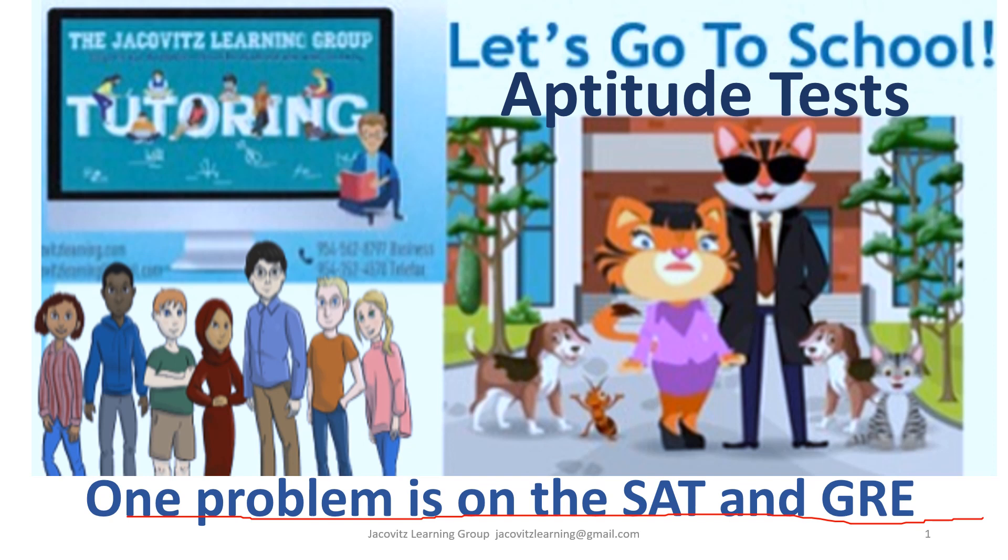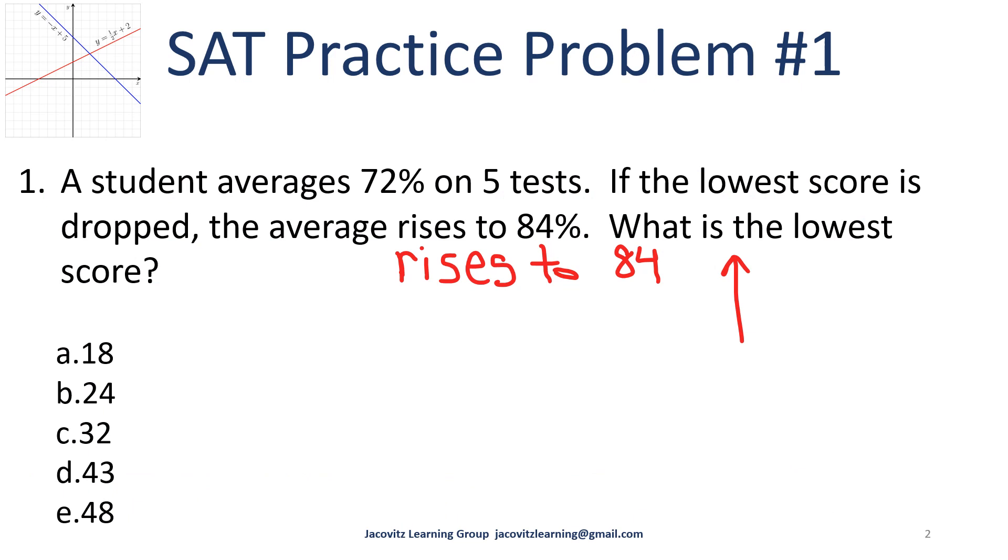This one was straight from the SAT. A student averages 72% on five tests. If the lowest score is dropped, the average rises to 84%. What is the lowest score? Let's use the language that was given to us and start thinking about the problem.